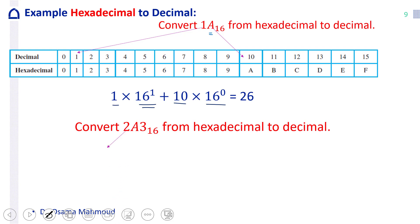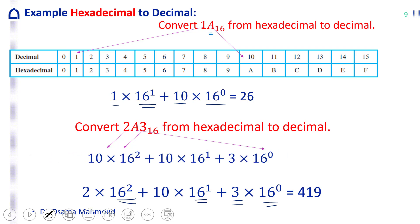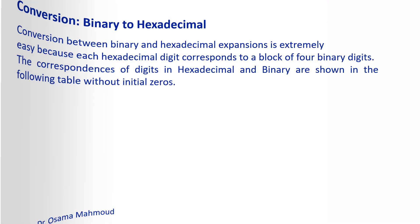Now for the second example: 2A3 in hexadecimal. The digit 2 corresponds to 2, A corresponds to 10, and 3 corresponds to 3. Starting from the right with power 0: 3 times 16 to the power of 0, then A (10) times 16 to the power of 1, then 2 times 16 to the power of 2. Adding them together gives the corresponding decimal value of 419.